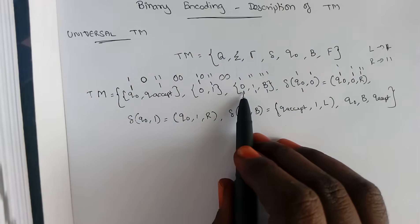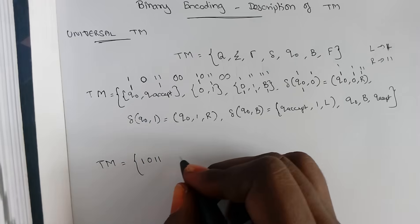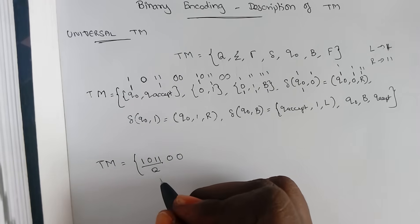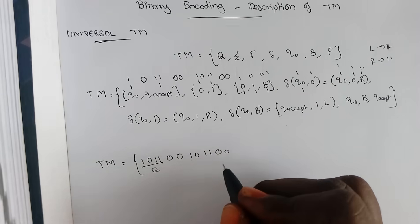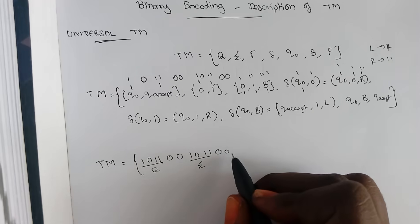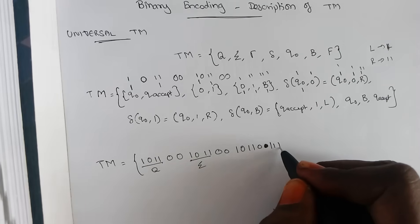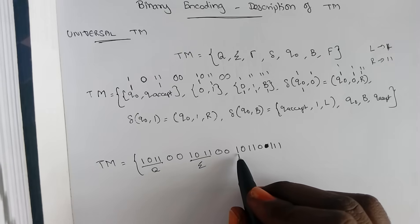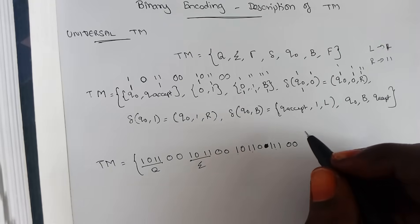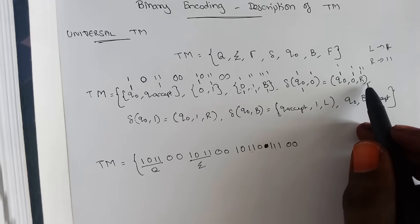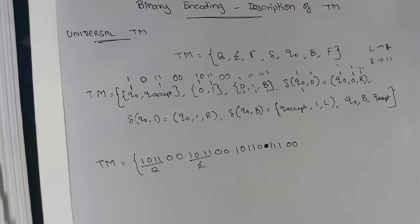The final description for a Turing machine is given as: one, zero, one one — separated by double zero — these are your states. For input: one, zero, one one — the first and second inputs, only two inputs, separated accordingly. Next are the tape elements: one, two ones, or three ones. So this is a bit-encoded format — one, two, three elements are in your tape elements, separated by two zeros. Now come your transitions.